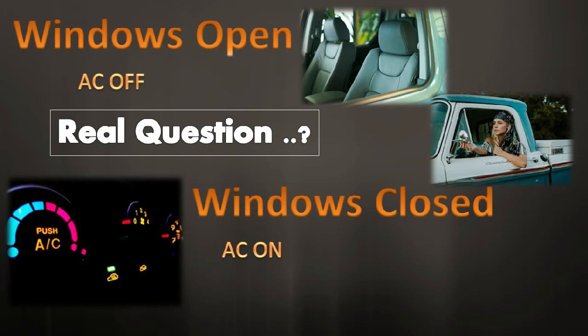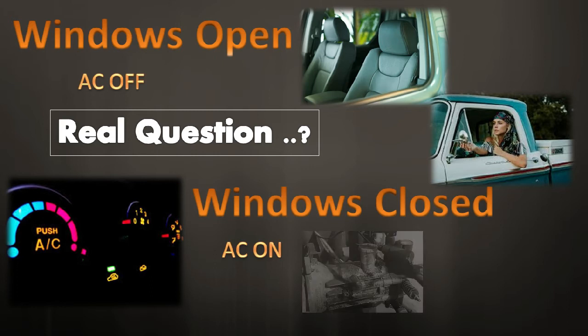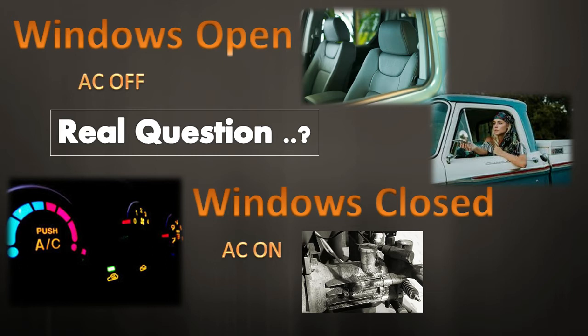If you wonder whether ACs reduce fuel consumption on their own, the answer is no — ACs do not save fuel by themselves. ACs have a refrigerant compressor, which is a power-absorbing device. It consumes mechanical power from the engine, increasing the load on the engine and increasing fuel consumption. In short, when you turn the AC on, it obviously consumes more gas. So how can it be efficient?